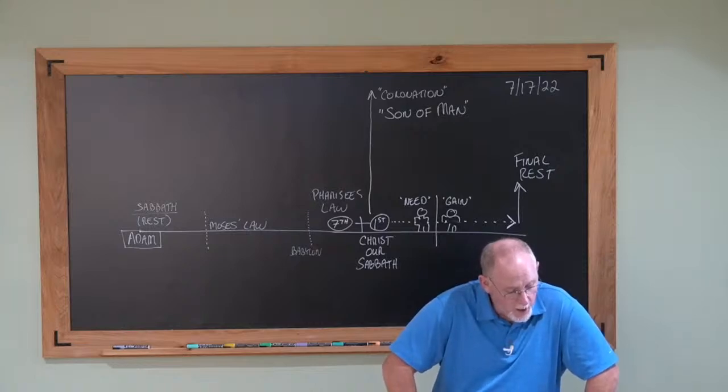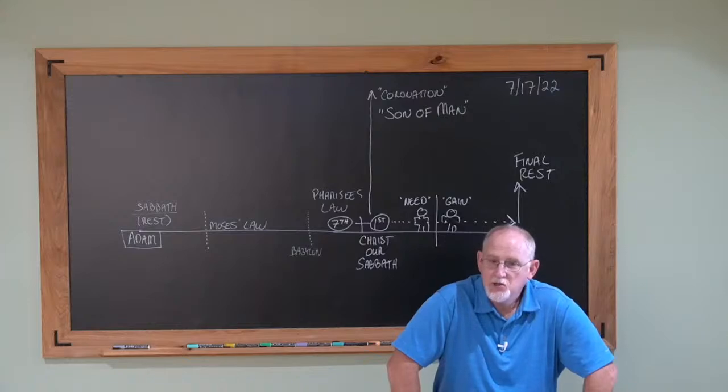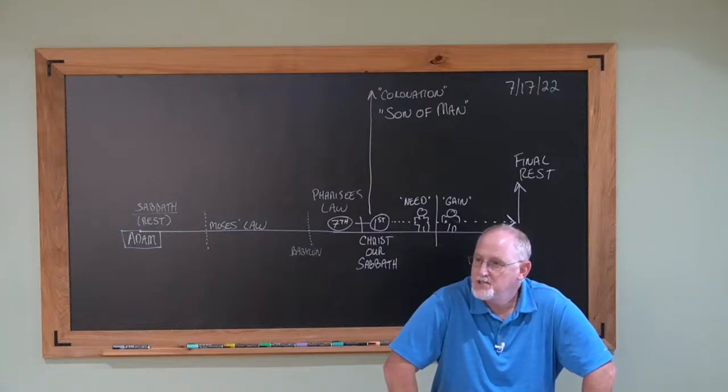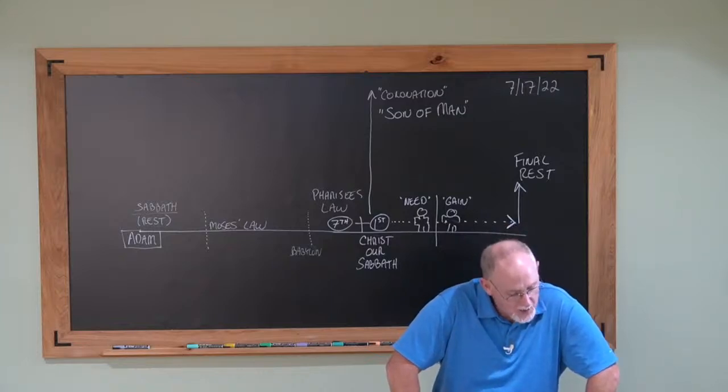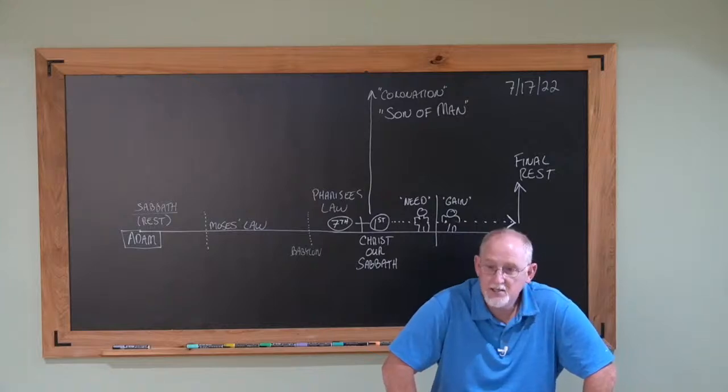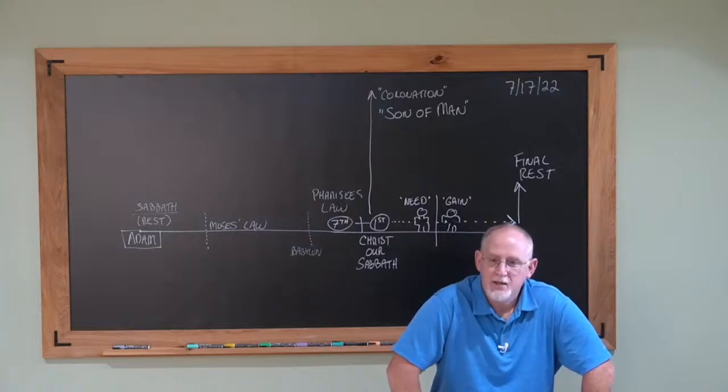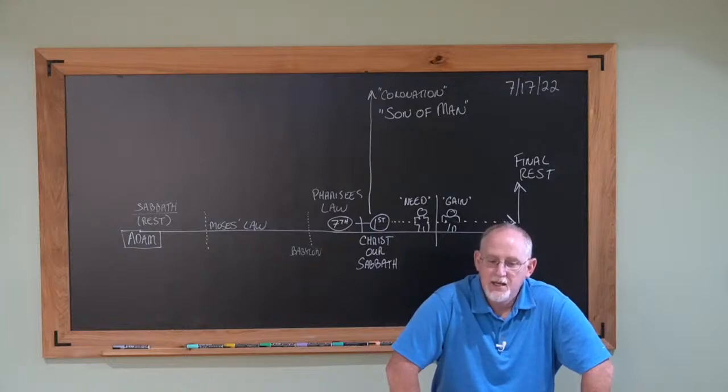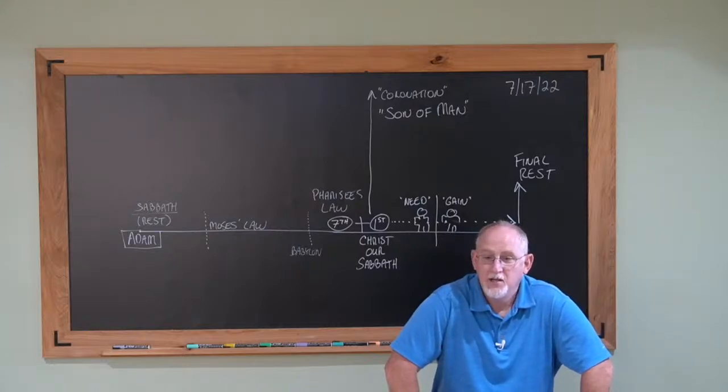The scribes and the Pharisees watched Him. They had their Sabbath day that they couldn't do anything on, but they're okay setting a watch and sending spies following Christ. It says, whether He would heal on the Sabbath day, that they might find an accusation against Him. Isn't it amazing to think about the blindness of man?